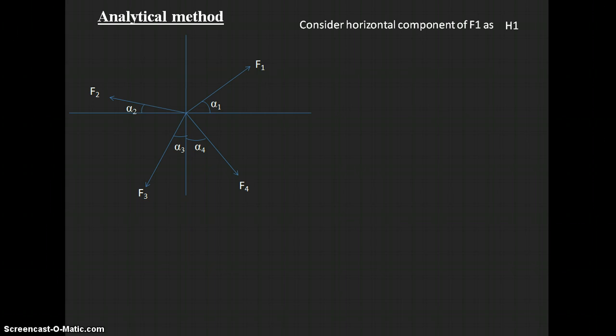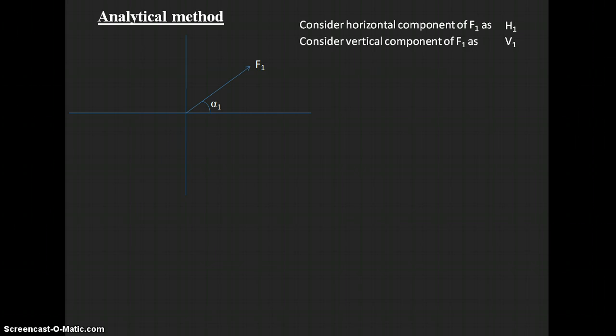We denote the horizontal component of F1 as H1 and the vertical component of F1 as V1, in the x and y directions respectively. By shifting V1 to the right side, we can observe that a right-angle triangle is formed, and using this right-angle triangle we can find H1 and V1 in terms of angle alpha-1 and force F1.